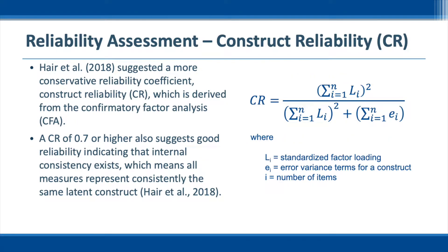The textbook suggests a more conservative reliability coefficient, also called construct reliability, which is derived and calculated from the confirmatory factor analysis. This is a formula that can be used to calculate the construct reliability. The construct reliability is evaluated based on the factor loadings and error variance. A construct reliability of 0.7 or higher suggests good reliability, indicating that internal consistency exists, which means all measures consistently represent the same latent construct. It is recommended that we use both Cronbach's alpha and construct reliability to measure the reliability of constructs.